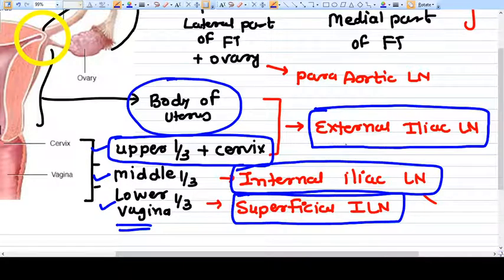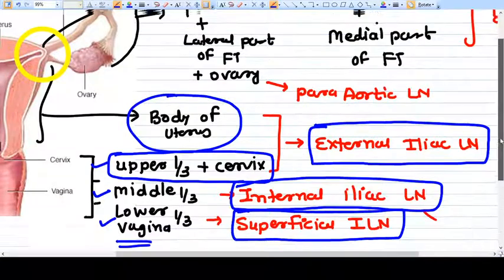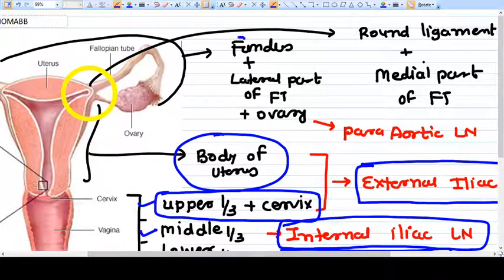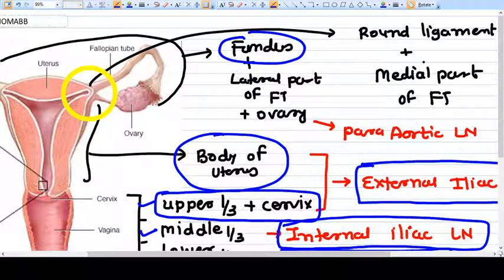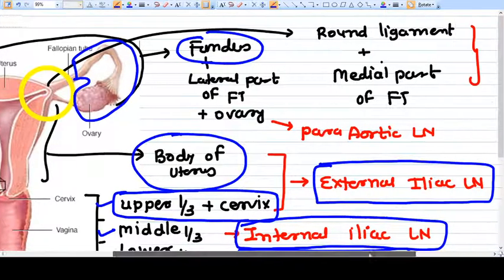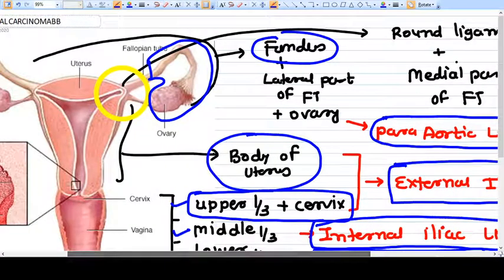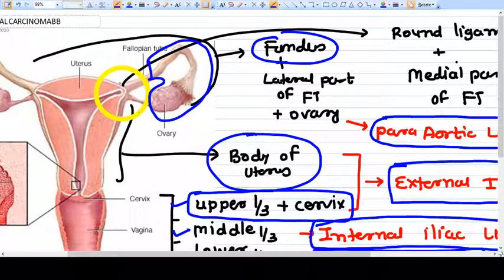Now let's talk with the upper part. Here, the fundus of the uterus along with the lateral part of fallopian tube—this is the lateral part of fallopian tube—along with ovary, all drain into para-aortic lymph node. Remember, para-aortic lymph node. This yellow circle I have shown you, this part drains in a different lymph node, that is external iliac lymph node.